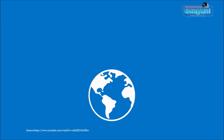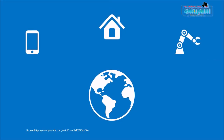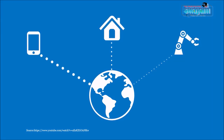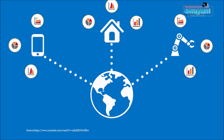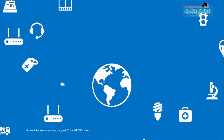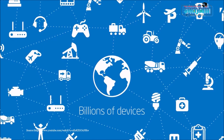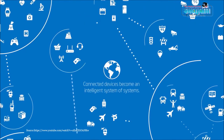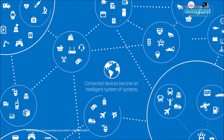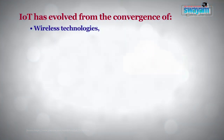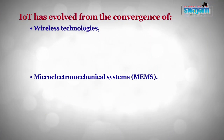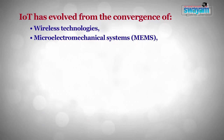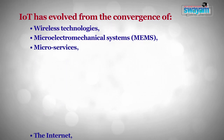Now let's discuss Internet of Things. IoT refers to the billions of physical devices around the world that are now connected to the Internet, collecting and sharing data. IoT has evolved from the convergence of several technologies such as wireless technologies, micro-electromechanical systems, micro-services, and the Internet.